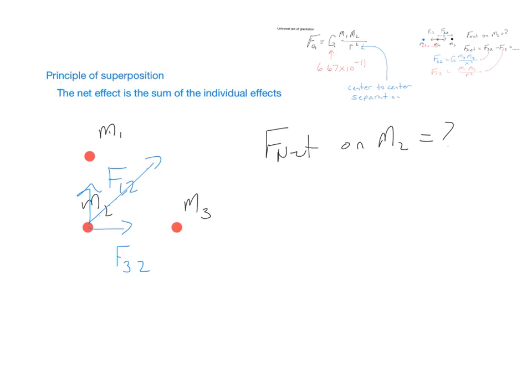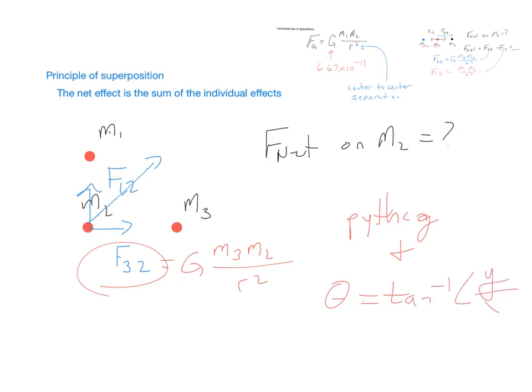And we end up with a two-dimensional net force, not drawn to scale. So, here, you would really just have to find each of these individual forces. Since each of those would just be an x and y component, the net force would be the vector sum of both of those.